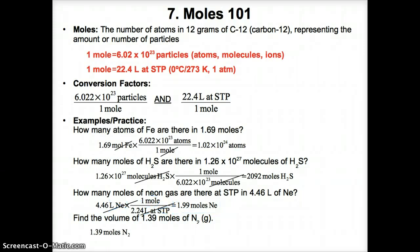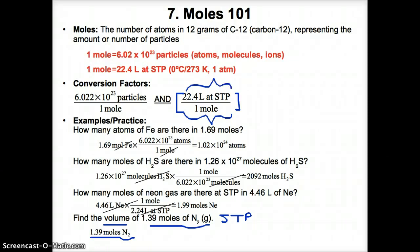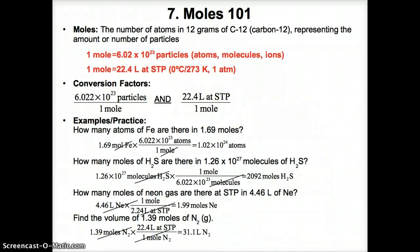Find the volume of 1.39 moles of N₂ gas at STP. Start with 1.39 moles of N₂ and convert to liters. Use the conversion factor 22.4 liters per mole, with moles in the denominator so they cancel out, leaving liters. Multiply 1.39 by 22.4, giving 31.1 liters of N₂ gas.